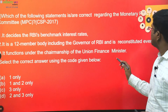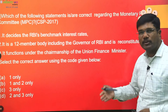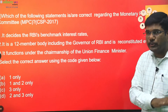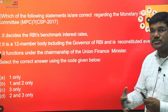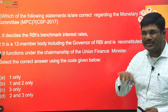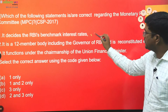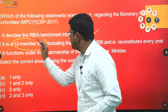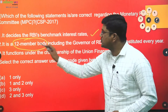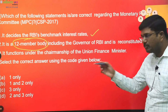Next: which of the following statements are correct regarding the Monetary Policy Committee (MPC)? Notice how many questions have come in previous year papers regarding monetary policy — it is also in the news because they recently increased the CRR. UPSC is not interested in the exact percentage but in applied questions. Statement one — it decides RBI's benchmark interest rate — yes. Statement two — it is a 12-member body including the governor of RBI, reconstituted every year. The problem is it is not a 12-member body; it is a 6-member body. So the second statement is wrong.